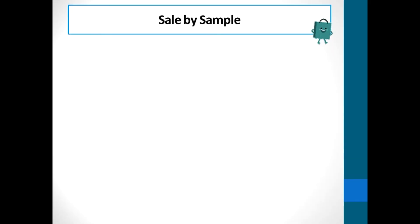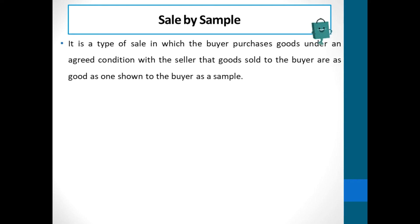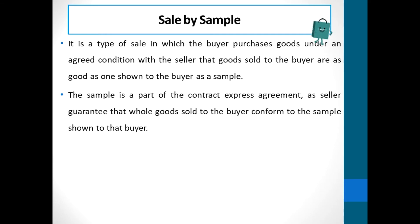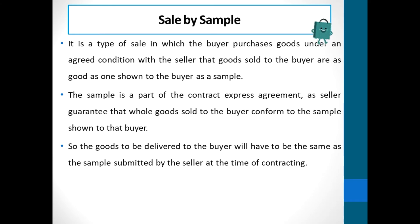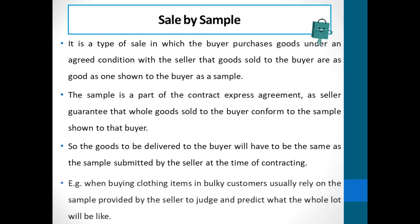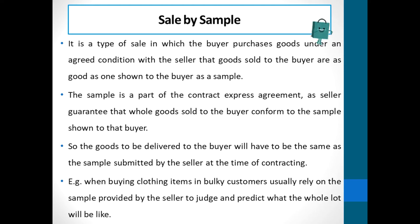First, we have sale by sample. It is a type of sale in which the buyer purchases goods under an agreed condition with the seller that goods sold to the buyer are as good as the one shown to the buyer as a sample. The sample is a part of the contract. In an express agreement, a seller guarantees that all goods sold to the buyer conform to the sample shown to that buyer. So the goods to be delivered to the buyer will have to be the same as the sample submitted by the seller at the time of contracting. For instance, when buying clothing items in bulk, customers usually rely on the sample provided by the seller to judge and predict what the whole lot will look like.